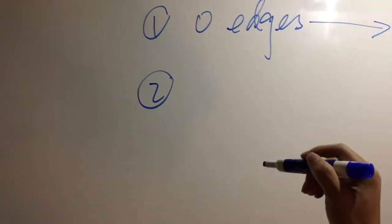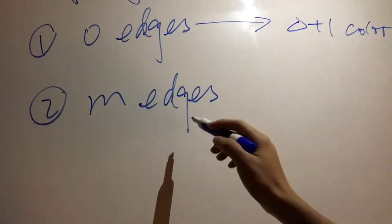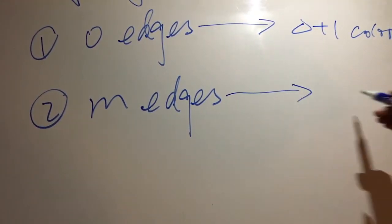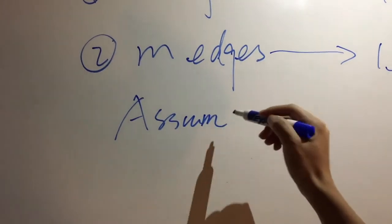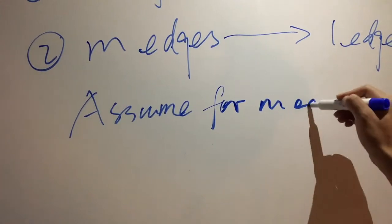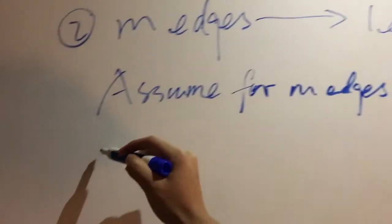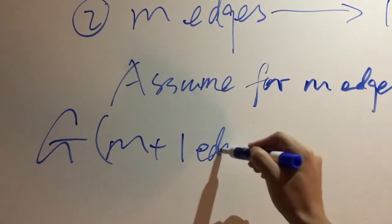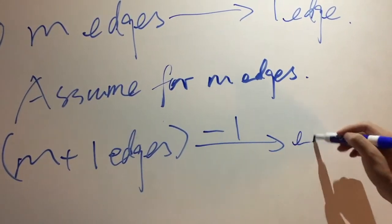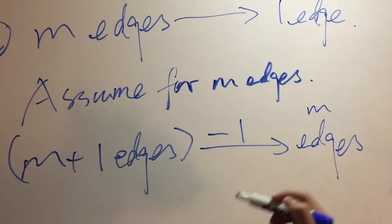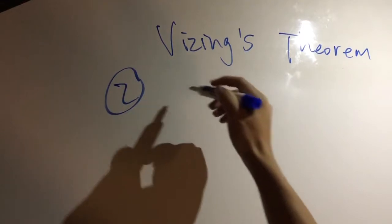The second condition is there is a specific number of edges, let's say M. For this condition, we can simplify the problem to considering only one edge. For a graph with M plus one edges, we can remove one edge and color the remaining M edges. So we need to only consider the one edge that we removed.